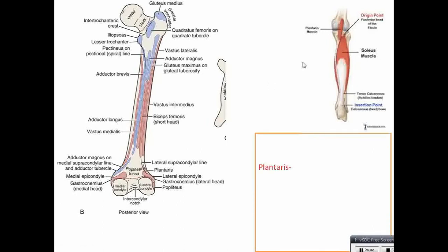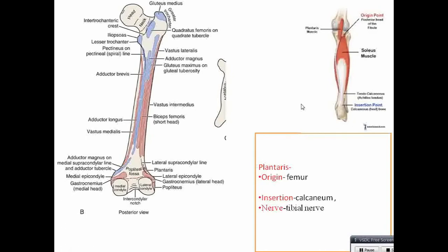Plantaris is another muscle in the superficial posterior compartment of the leg. It originates from the femur and is inserted to the calcaneum. Nerve supply: tibial nerve. Plantaris muscle sometimes can be absent. Gastrocnemius and soleus are strong plantar flexors of the foot at the ankle joint.